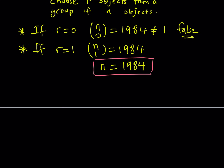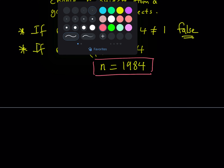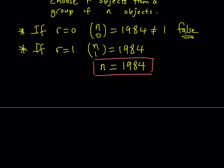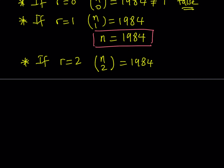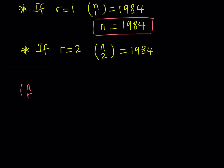Let's save this solution — at the end we're going to put it all together. Now, the next thing I'm going to look at is what happens if r is equal to 2. Would that give me a solution? I'm not going to go through all the numbers all the way through 1984. I just want to look at some smaller cases. So if r is equal to 2, then I'm basically talking about n choose 2 is equal to 1984. At this point, it might make sense to talk about the general formula for n choose r.